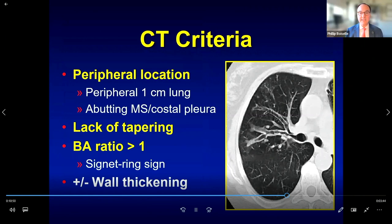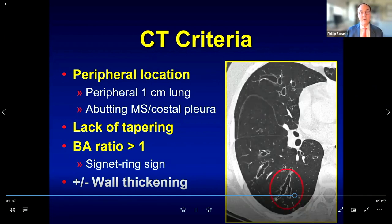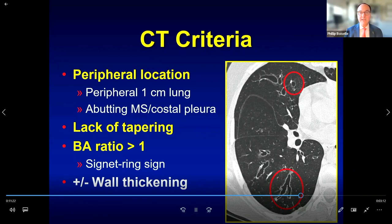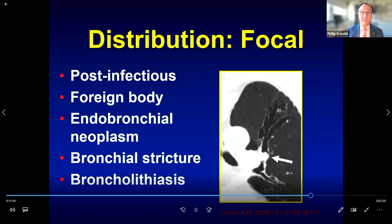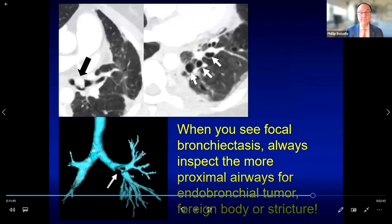Established CT criteria for bronchiectasis require one or more of the following: bronchi identified within one centimeter of the lung periphery or abutting the mediastinal or costal pleura; lack of tapering — bronchi should get smaller as they go from central to peripheral; or an increased broncho-arterial ratio creating a 'signet ring' appearance when the bronchus exceeds the artery in size. Whenever you see focal bronchiectasis, carefully inspect the more proximal airways to exclude an endobronchial neoplasm, foreign body, or stricture.